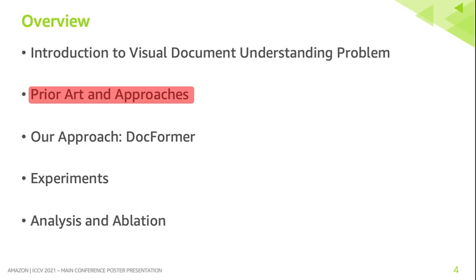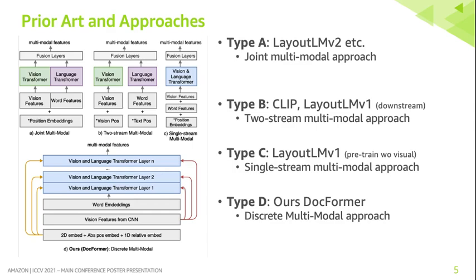Next we briefly look at existing multimodal approaches and where Docformer differs from them. Most approaches combining vision and language roughly fall into three categories, shown as type A, type B, and type C. We propose a category of multimodal learning called discrete multimodal, where visual and spatial features interact individually with language in each layer. We argue that spatial and visual dependencies differ across layers, and in each transformer layer, visual and language features separately undergo self-attention with shared spatial weights. These shared weights in the spatial domain cause correlation of information across modalities, thereby addressing the cross-modality feature correlation issue often found in multimodal learning.